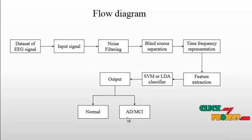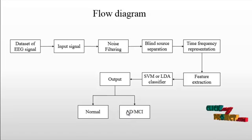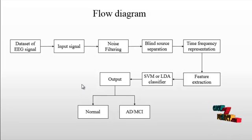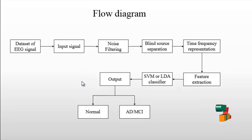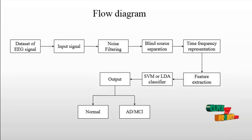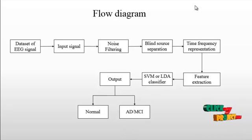The classifier outputs whether the signal is normal or abnormal. Finally, the result indicates normal or abnormal EEG signal — whether it corresponds to a healthy brain or one with disease. The overall flow involves: dataset input, preprocessing with Butterworth filter, wavelet sub-band decomposition (LL, LHL, HL), feature extraction of mean and standard deviation, and then entropy calculation.